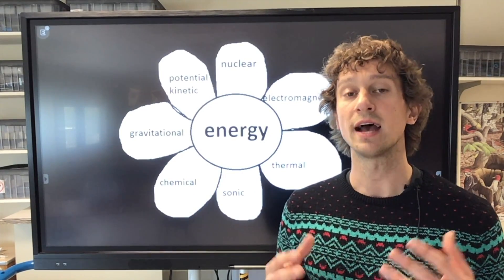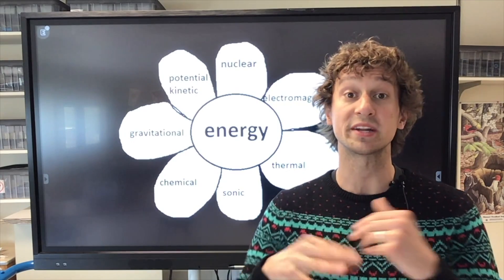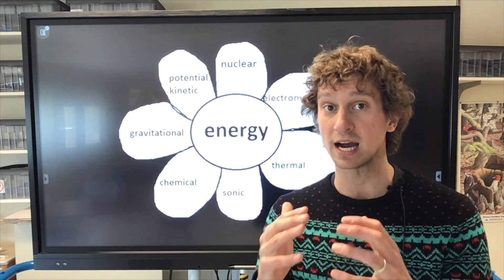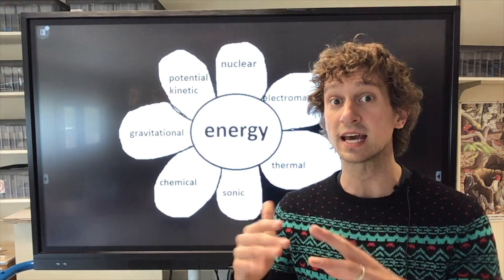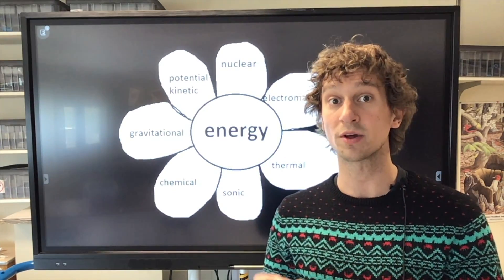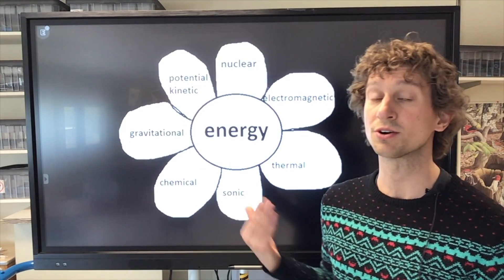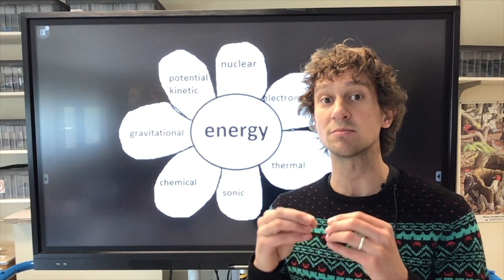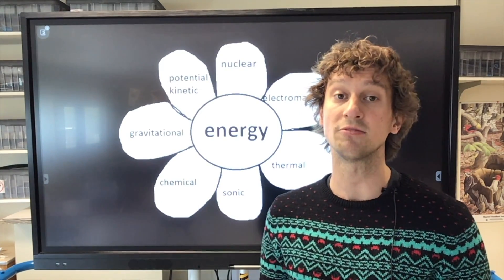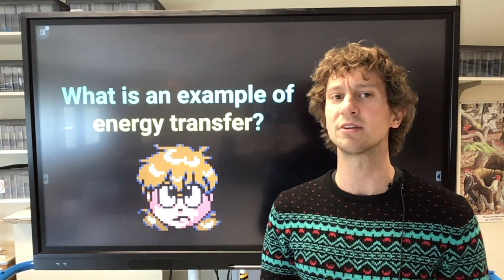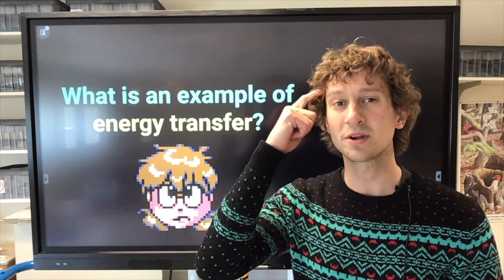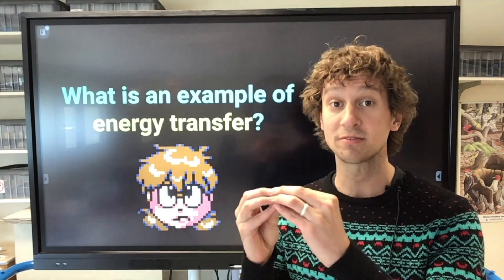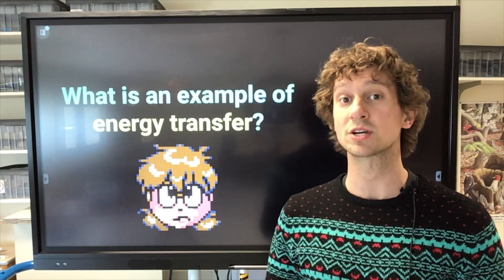Energy does not get destroyed — it simply moves around. When energy stays as the same kind, whether it's chemical, gravitational, thermal, sonic, or otherwise, that is a transfer of energy. What's an example of an energy transfer? Take a moment and think: what is an example of energy staying in the same type but moving from one object to another?